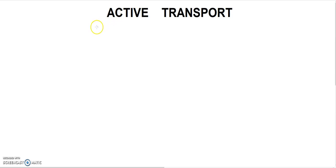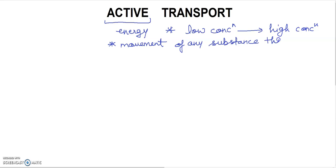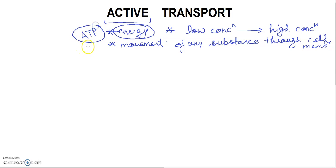Active transport basically requires energy. Active means energy is required. The molecules move from lower concentration to higher concentration through the cell membrane. This requires energy in the form of ATP. You all know ATP as an energy carrier — adenosine triphosphate — which works as an energy currency.